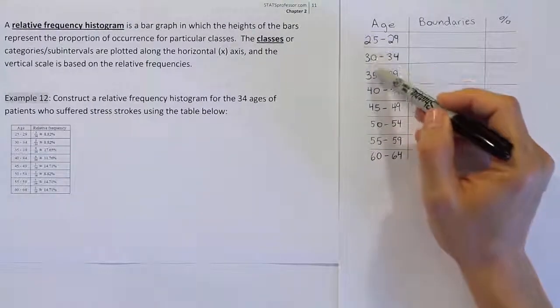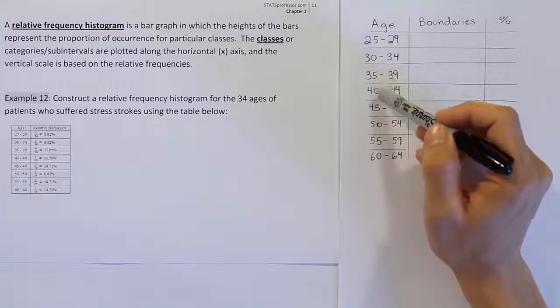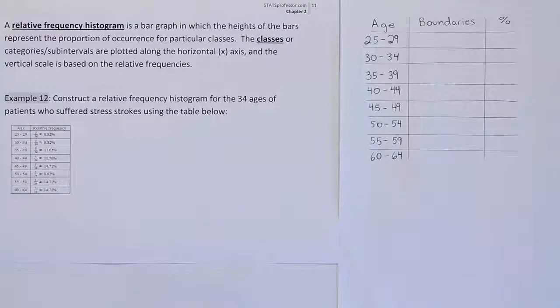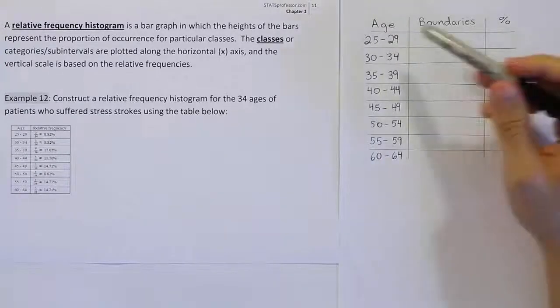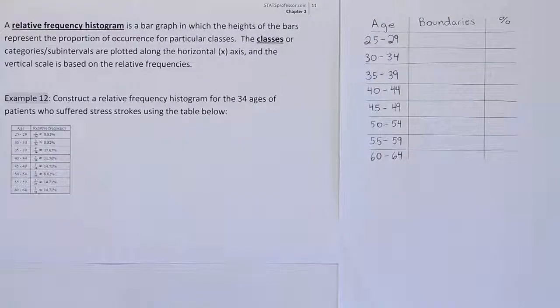In the case where the width is not uniform, in other words it's not the same distance from lower limit to lower limit throughout the table, we're going to have to use a slightly different approach. But for this example, we'll use this approach where the percents represent the heights of the rectangle and the width will be given by the class width.